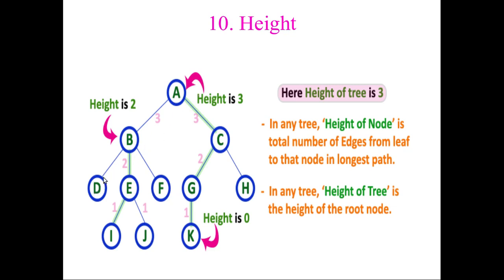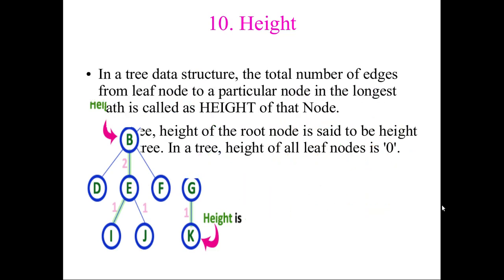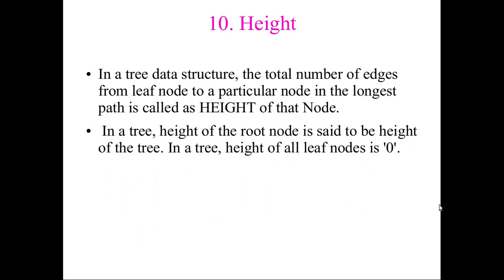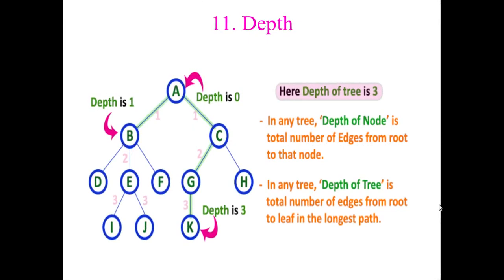For node A, considering all paths: some paths give height two, others give height three. The maximum height among all leaf-to-node paths is three, so the height of this tree is three. Similarly, for B it is two. You always take the maximum height, calculated from the leaf node upward.